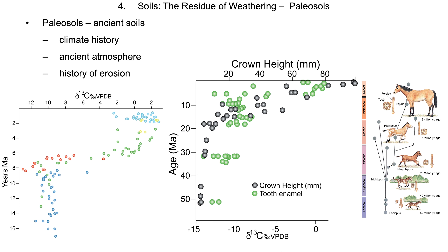As a result of the change in grass types, we see a change in the crown height of horse teeth. As horses eat different types of grasses, their teeth evolve. So a change in atmospheric CO2 might have resulted in a change in crown height in horses, which resulted in the evolution of horses — that's kind of cool. And lastly, paleosols can provide us with a history of erosion, where the type and amount of material tells us how it got there and where it came from.